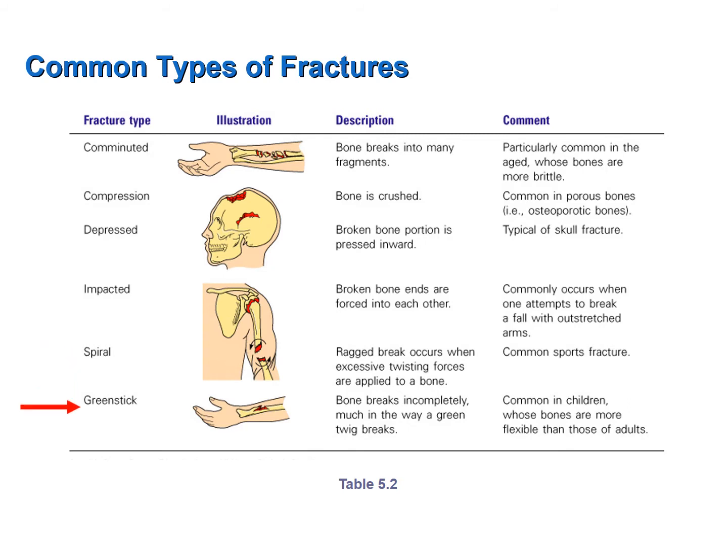A greenstick fracture is an incomplete break of the bone. It gets its name from the way that a green twig incompletely breaks. Be able to identify these fractures if given a description of them, such as on a multiple choice test. You will have the names of these fractures available and will simply need to match the descriptions with the names.